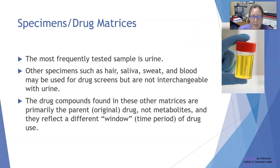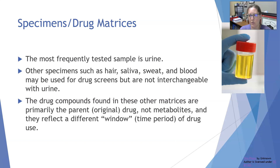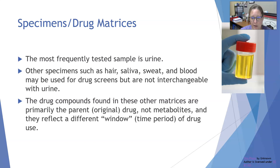The types of specimens or drug matrices to test include urine, which is the most frequently tested sample and very easily obtained. Other specimens can be obtained, such as hair, saliva, sweat, and blood. The results are not interchangeable with urine drug screen results and the methodologies are not interchangeable either. Some nursing programs use hair instead of urine because it captures a longer span of time. The drug compounds found in these other matrices are primarily the parent drug — the original drug, not their metabolites — and they reflect a different window or time period of drug use.